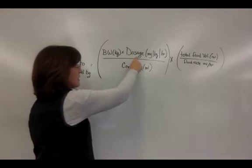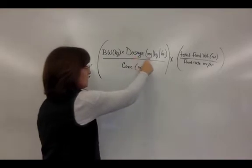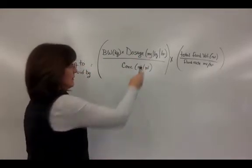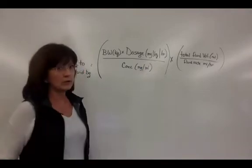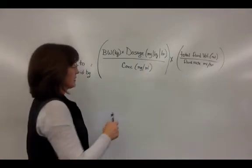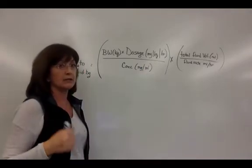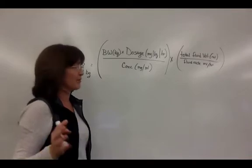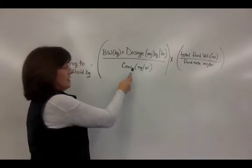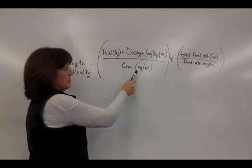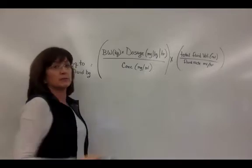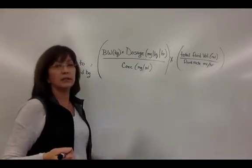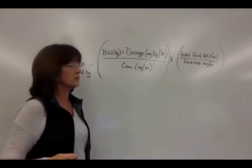Body weight is in kilograms, and the dosage rate is in mg/kg/hour instead of just mg/kg — or it could be in milliequivalents per kilogram per hour. Then you divide by the concentration, which here is in mg/mL, but if it's an electrolyte solution it may be in milliequivalents per mL.